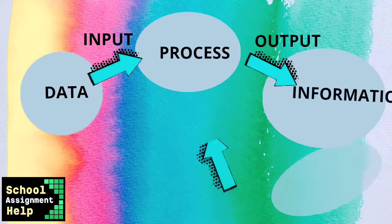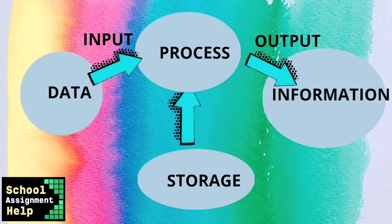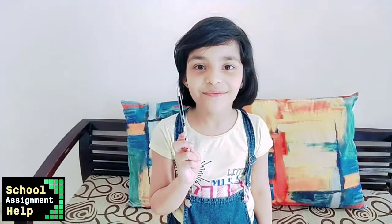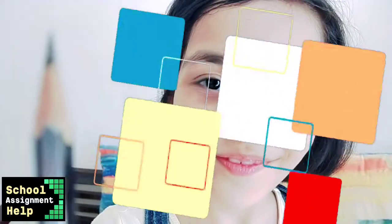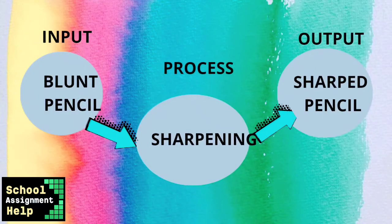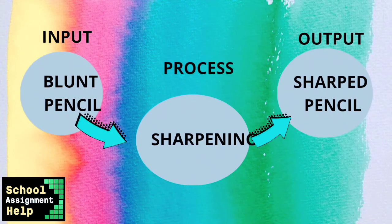In our daily life we can also find examples of the IP cycle. For example, I have a broken pencil — this is the input. I will sharpen it — this is the process. The sharp pencil is the output.